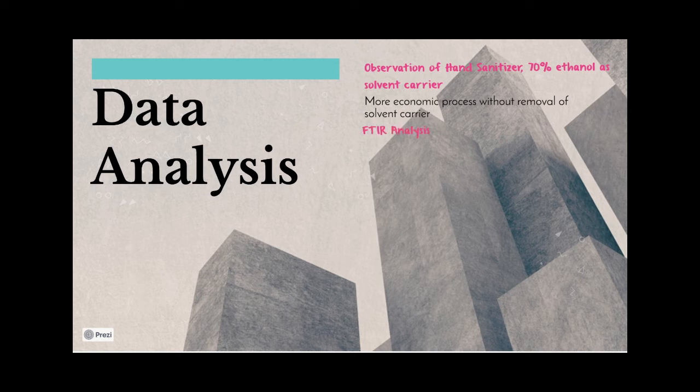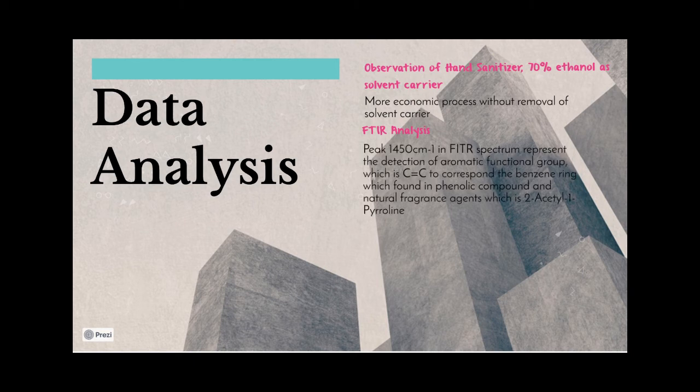FTIR analysis. In FTIR analysis by comparing the pure formulation hand sanitizer and addition of pandan essence oil not significantly identified different of spectrum data. However, peak 1450 cm-1 in FTIR spectrum represent the detection of aromatic functional group, which is C equals C to correspond the benzene ring which found in phenolic compound and natural fragrance agents which is 2-acetyl-1-pyroline.